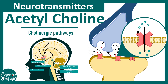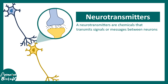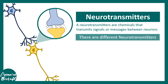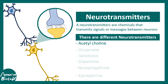In this video we'll be talking about cholinergic neurotransmission, focusing on acetylcholine as a neurotransmitter. Neurotransmitters are chemical molecules that transmit signals between two neurons — they are the messages by which neurons communicate with each other. There are different types of neurotransmitters like acetylcholine, glutamate, serotonin, dopamine, norepinephrine, epinephrine and many more, but in this video our focus is on acetylcholine.